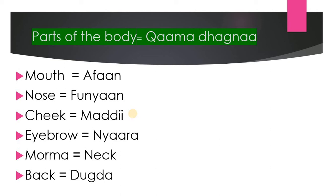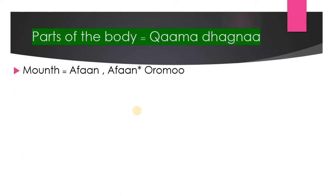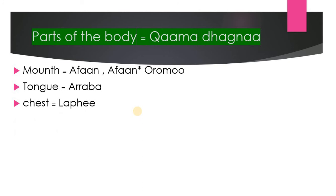Back is 'dugda,' dugda. Mouth, as I decided, is 'afaan,' and also Afan Oromo means language. Tongue is 'arraba,' arraba. Chest is called 'lape,' lape — the 'ph' is just like in English names such as Petros — so lape, lape.